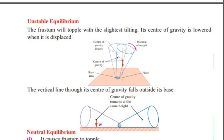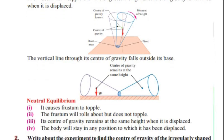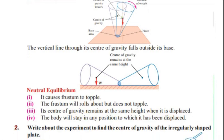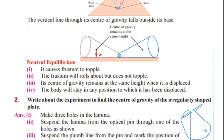Neutral equilibrium: the center of gravity remains at the same height when the object is displaced. The object rolls about but does not topple, and the body will stay in any position to which it has been displaced.